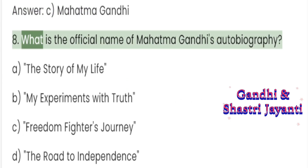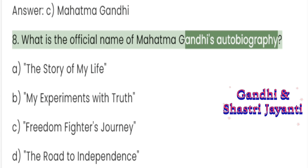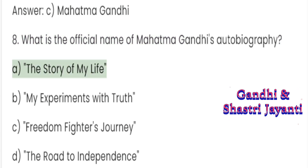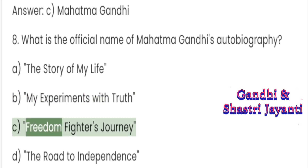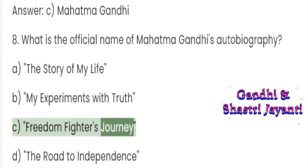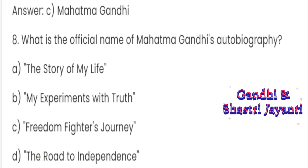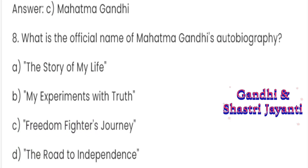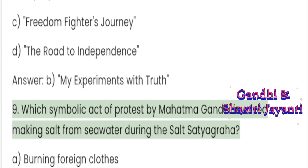Question 8: What is the official name of Mahatma Gandhi's autobiography? A. The Story of My Life. B. My Experiments with Truth. C. Freedom Fighter's Journey. D. The Road to Independence. Answer: B. My Experiments with Truth.